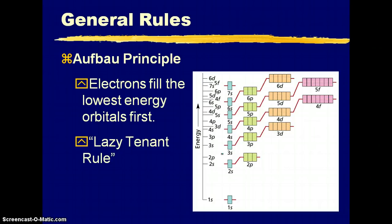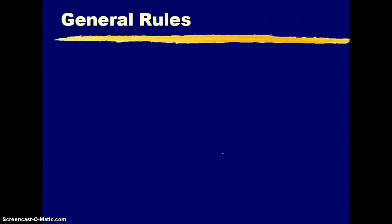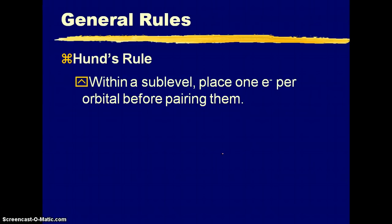All right, we're still going with the same ideas before of filling the lowest energy level first. So we always start with one s. This is called the lazy tenant rule because people always want to be on the first floor before they want to climb to the seventh floor with stairs and no elevator.